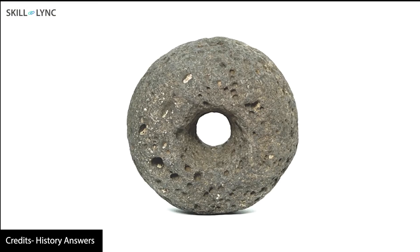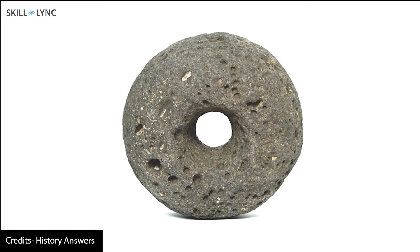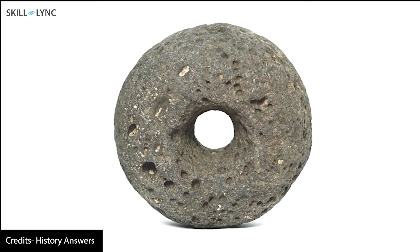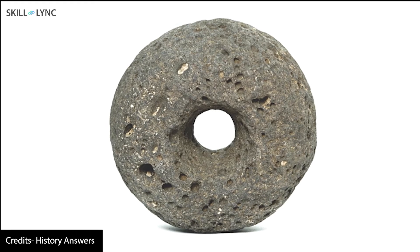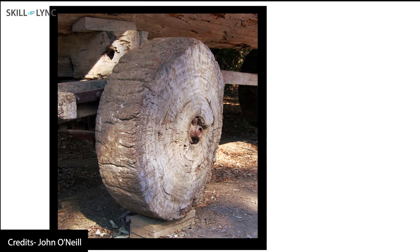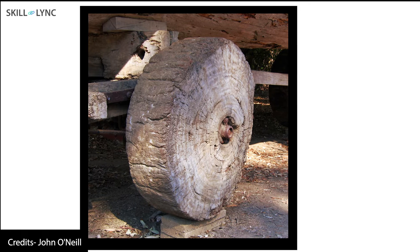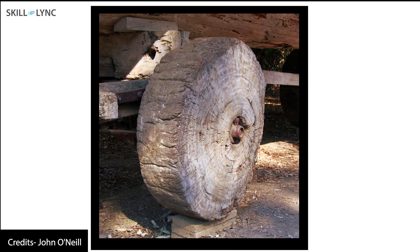The first wheel was an extremely crude object. It was made from a block of stone shaped as a circle. This was soon replaced by wooden wheels that were cut from tree logs.